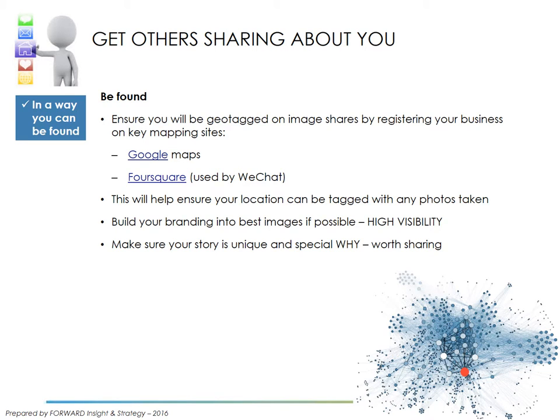Be found. It's really important that when people are sharing, they can find you, and that any pictures shared on Ma Fong Wu and Chong Yeo in China are geotagged. When the photo is uploaded, it pushes location data so someone can find you online. In order to do that, you must be geolocated on Google Maps and absolutely on Foursquare, which is used by WeChat and Chinese social media. We have booklets on our website showing you how to geolocate on both platforms. Make sure your branding is visible in images and your story is unique.